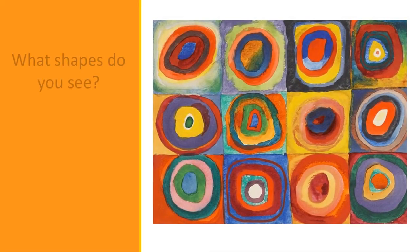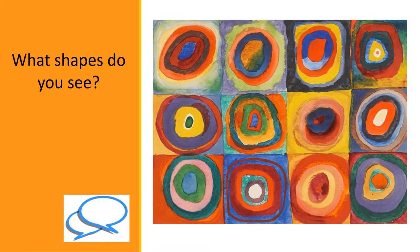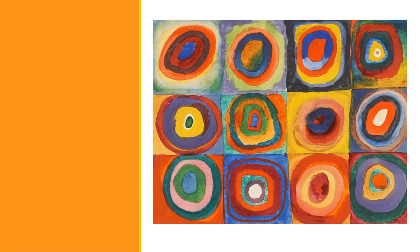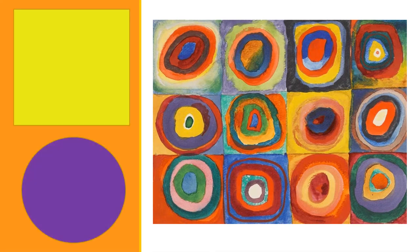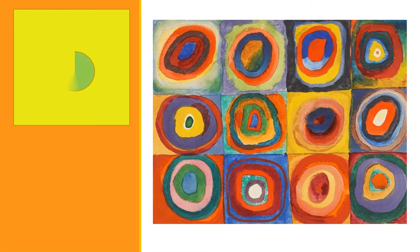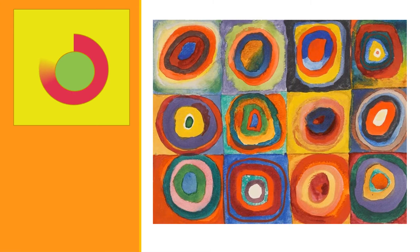Which shapes has Kandinsky used in this colour study? There are two shapes you will see: a square and a circle. You may notice that the circles are different sizes and can be found inside the square. Each circle within the square is a different colour.